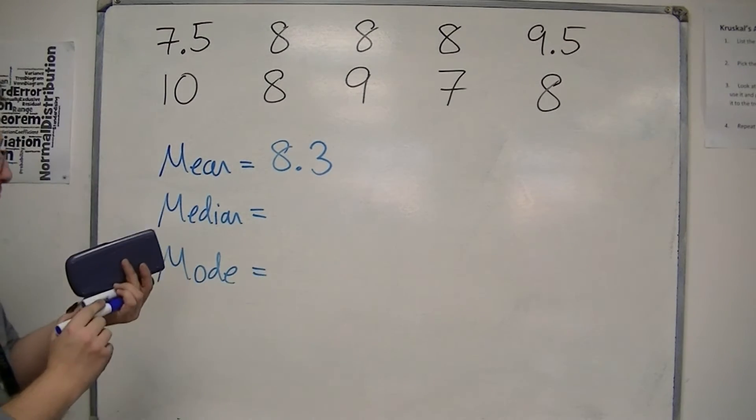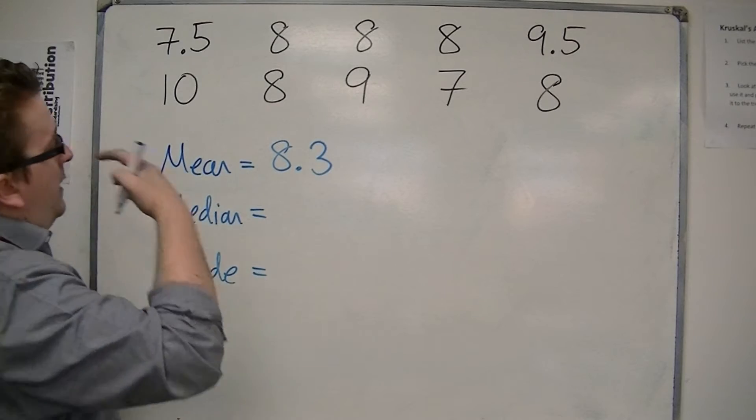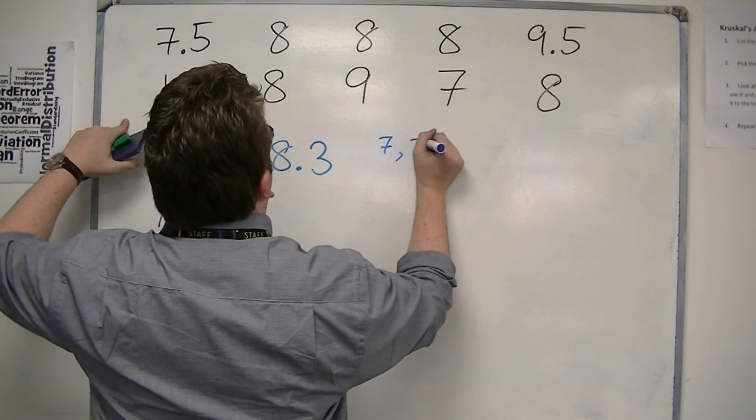The median, we need to put them all in order. OK, so we have a 7. We have a 7.5.